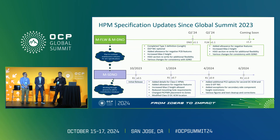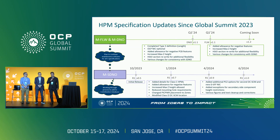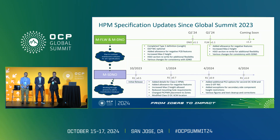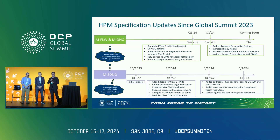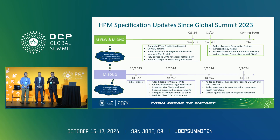The idea behind these two specs is that we're in what we call a maintenance mode. We've continued to release our 1.1 updates in Q1 of 2024, and we have 1.2 updates coming out. The basic idea around the maintenance updates is alignment to our new specification called MSDNO, as well as fixing typos and better alignment between the specifications.